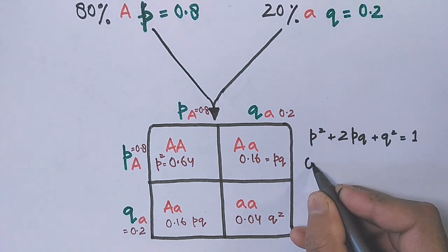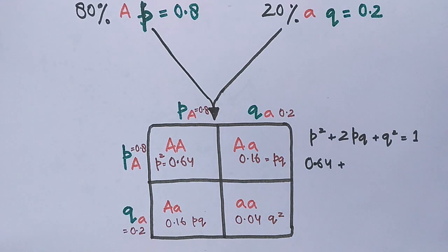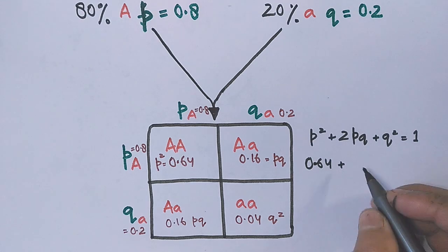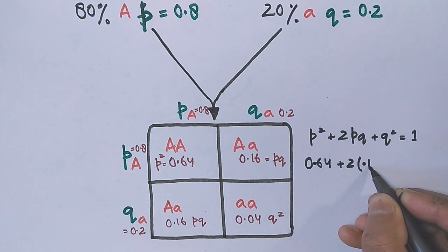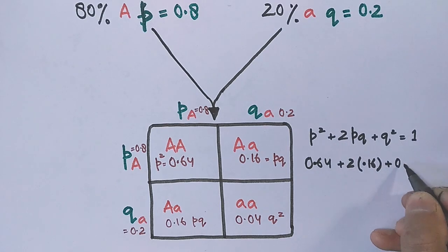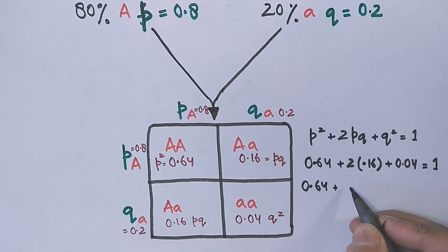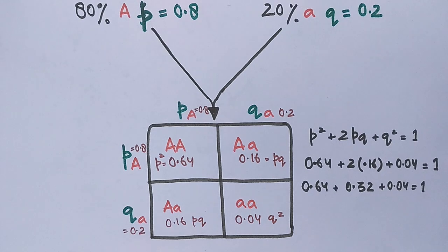P² is 0.64. Twice PQ, that's 2 multiplied with 0.16, because Aa, the heterozygous genotype, is two times in the cross. Then Q² comes to be 0.04. Finally upon calculation we come to know that population is at equilibrium because left hand side equals the right hand side.